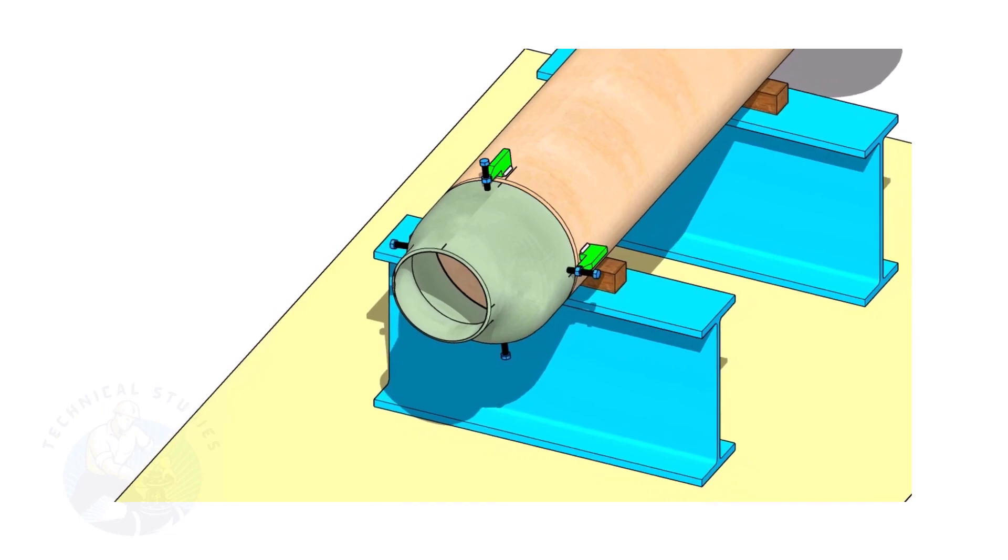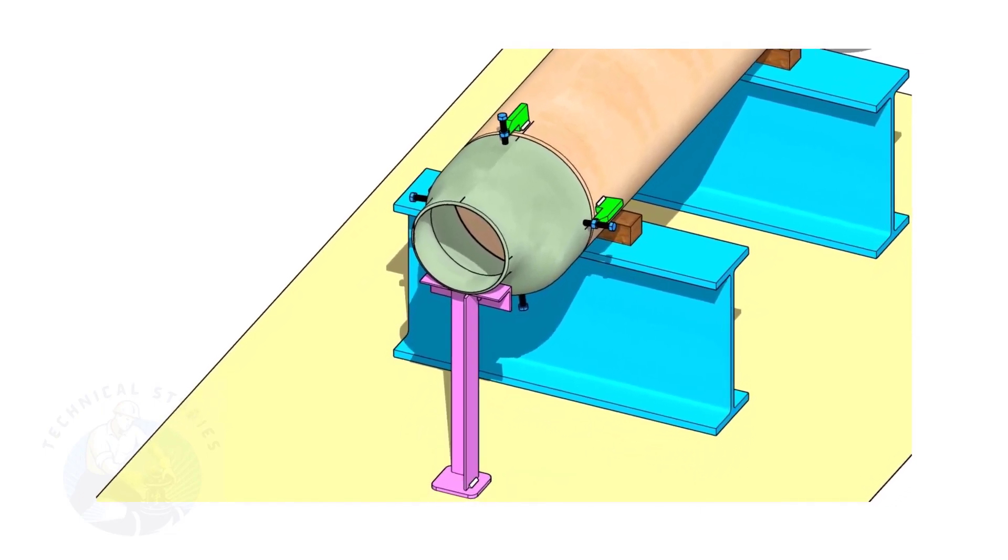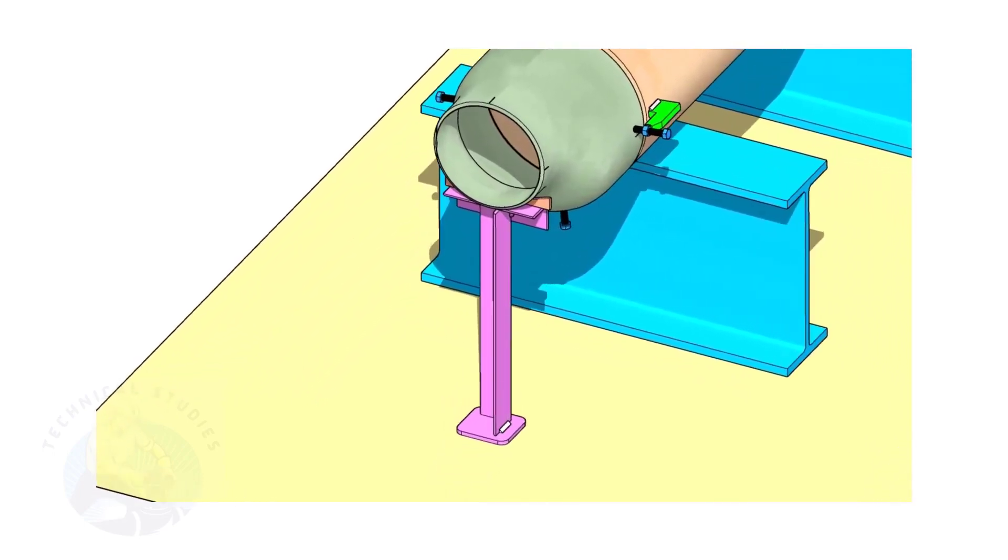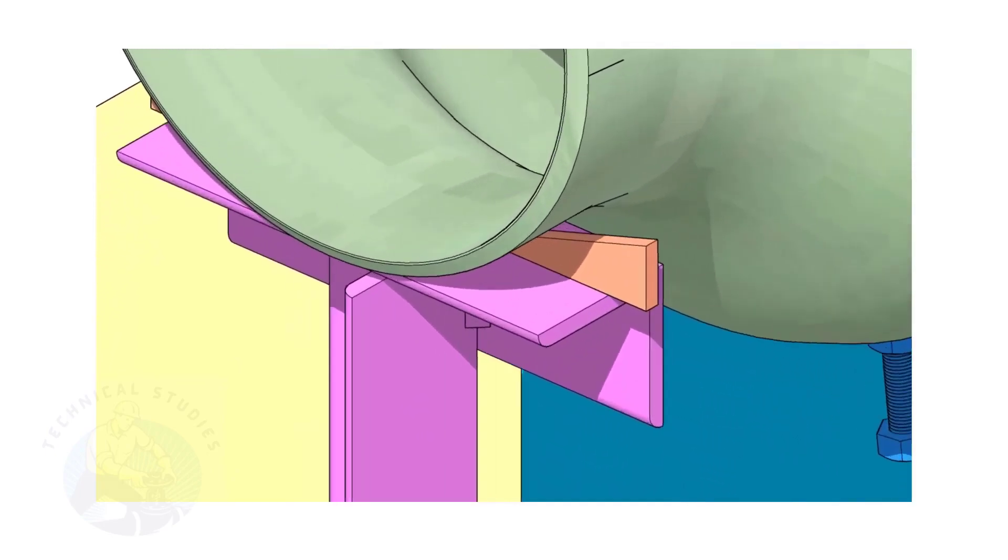Put the reducer in the clamps. Slightly tighten the bolts. Arrange proper supports below the reducer. The height of the support shall be adjustable. Here, I used simple wedges.